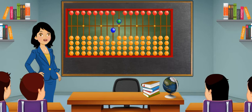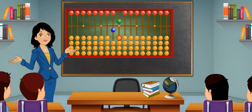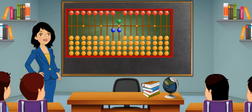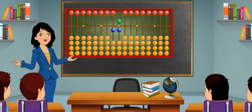To show number 16, one earthen bead on the tens place will remain the same and bring one earthen bead upwards so that one heaven bead and one earthen bead touch the skyline to show six on the ones place. This is number 16.